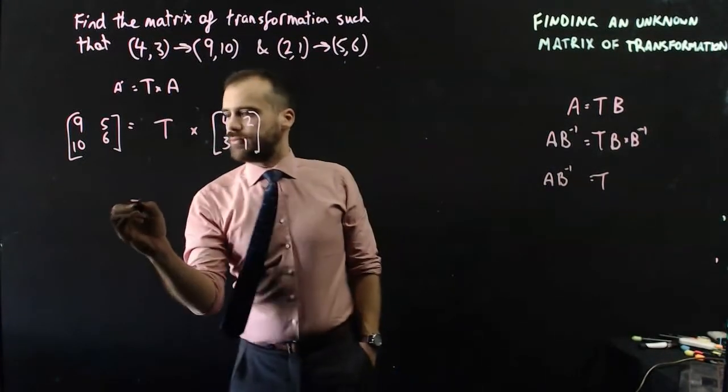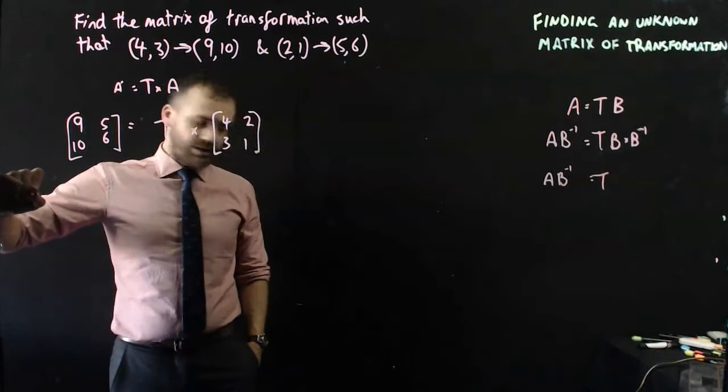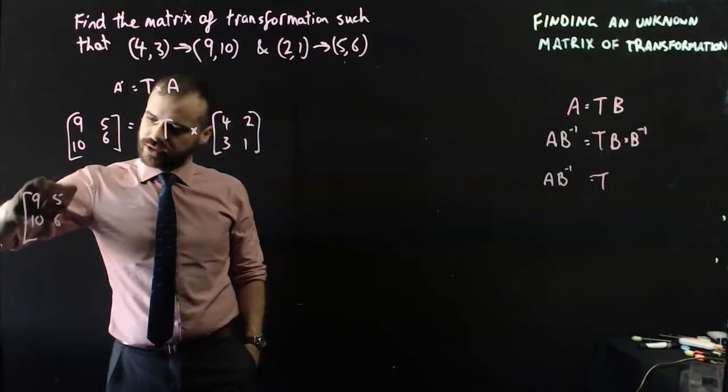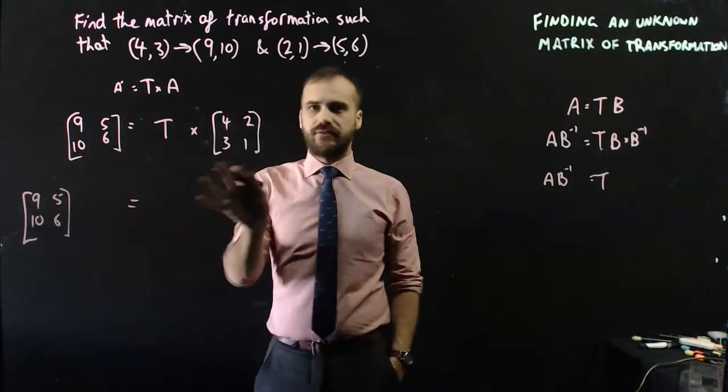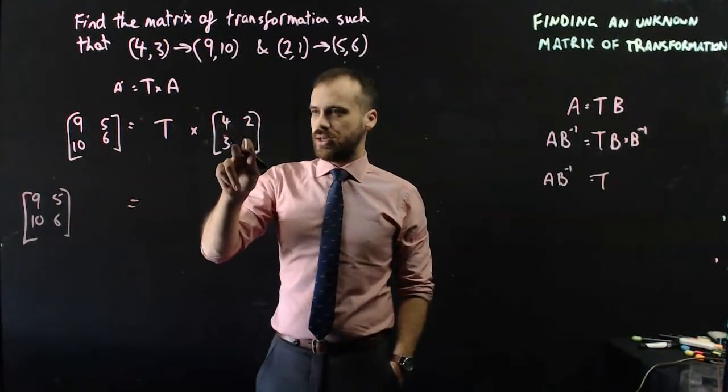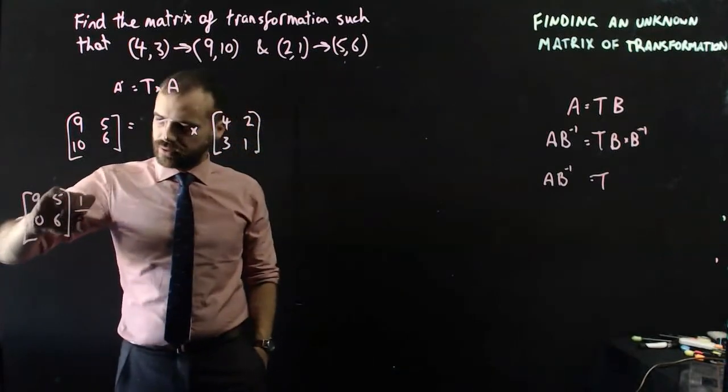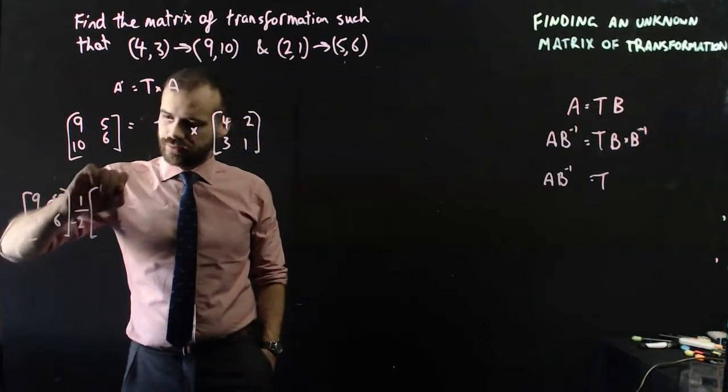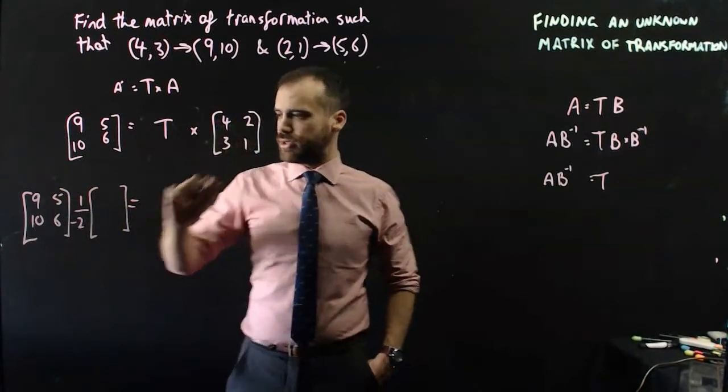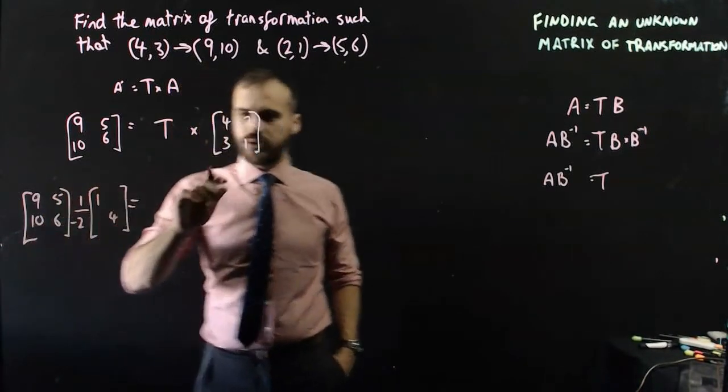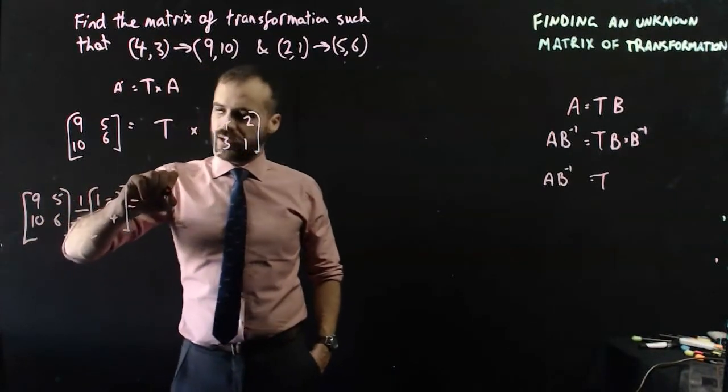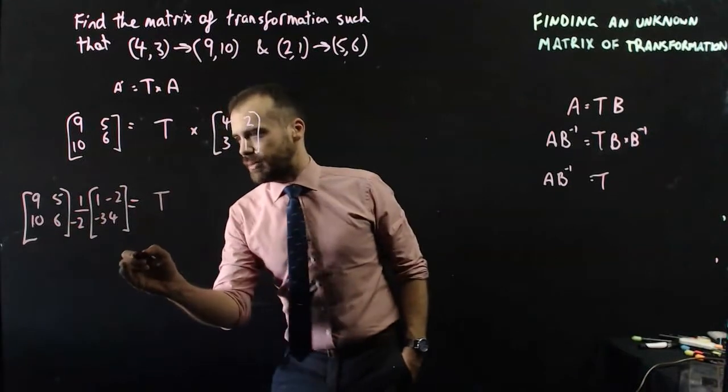We're going to have this matrix here: [9, 10; 5, 6]. And then, I need the inverse of this. So, 4 times 1, 2 times 3. That's 1 over negative 2. And then, swap those, 1 and 4. Negatives for these: negative 2 and negative 3. That equals our transformation matrix.